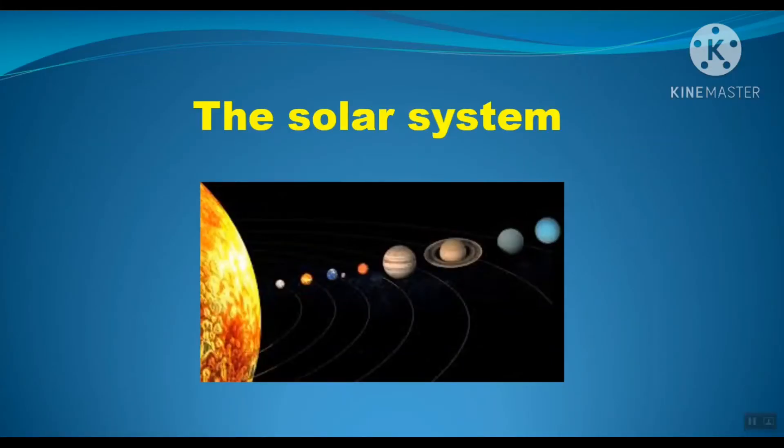This picture shows the solar system where the sun lies in the center of the solar system. And around it, there are eight planets with their moons. They all travel or orbit around the sun.